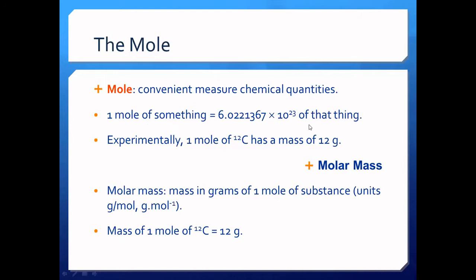Where did 6.02 × 10²³ come from? As Kyle answered — thank you, Kyle — this is Avogadro's number. Avogadro's number is 6.022 × 10²³. The numerator of Avogadro's number could be atoms, ions, molecules, or particles. The denominator is always mole. That is why it's referred to as one mole of 'something,' because we don't know what that something is — it could be atoms, ions, molecules, or particles.